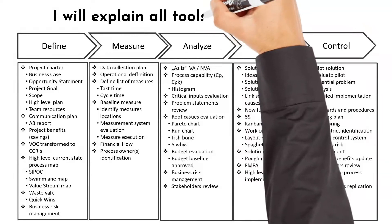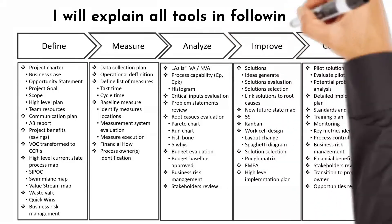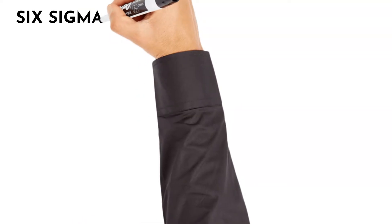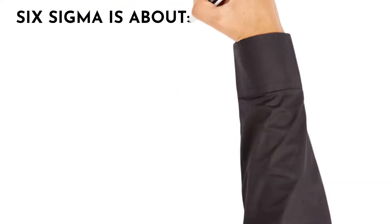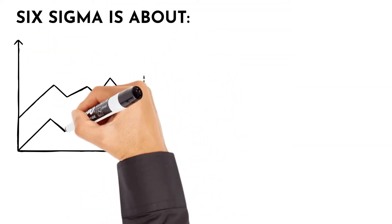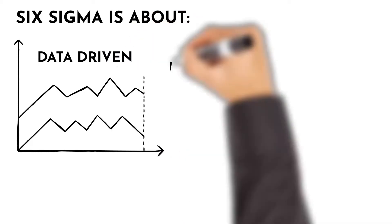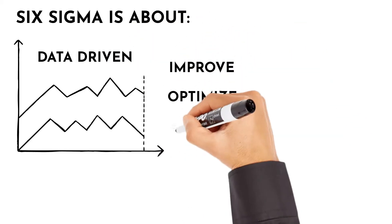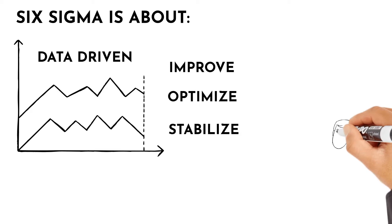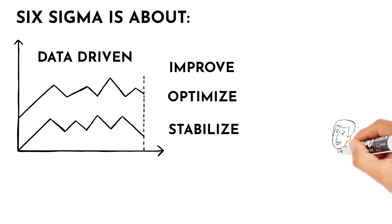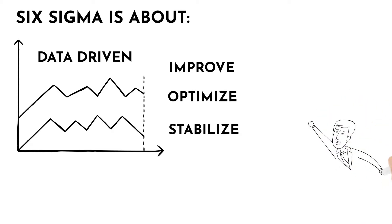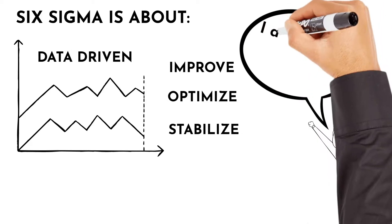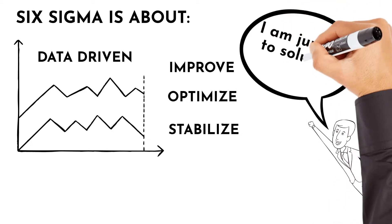There will be more following videos where all tool functionalities will be explained. Do not forget: Six Sigma refers to a data-driven improvement cycle used for improving, optimizing and stabilizing business processes and designs. So do not jump into solutions, however attractive and tempting it may be. Try to understand the current problem, identify your ideal state and create a plan to reach it.